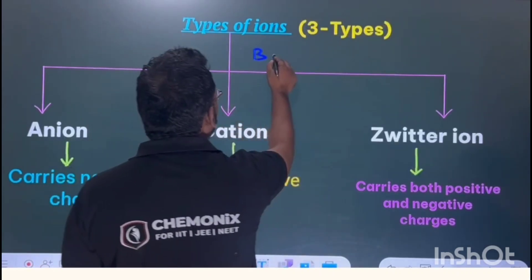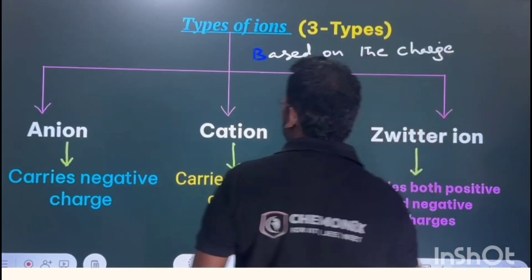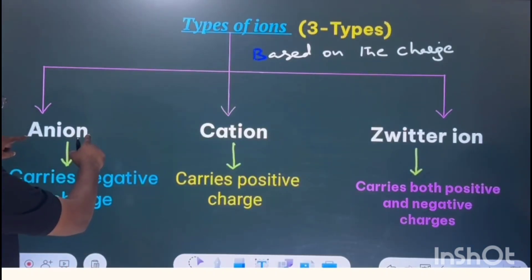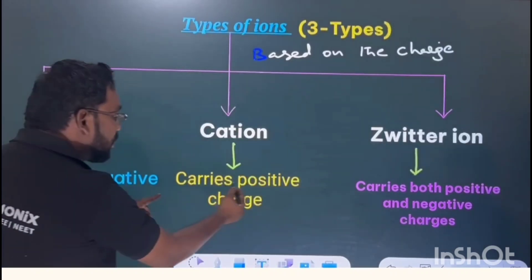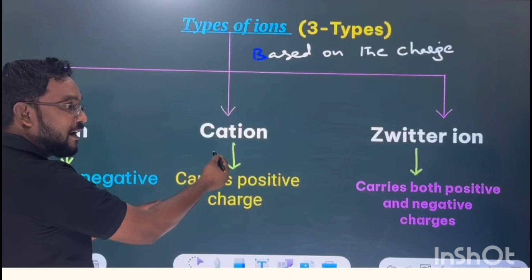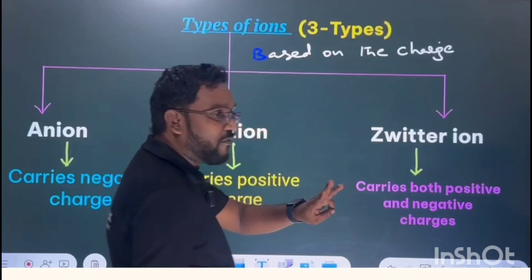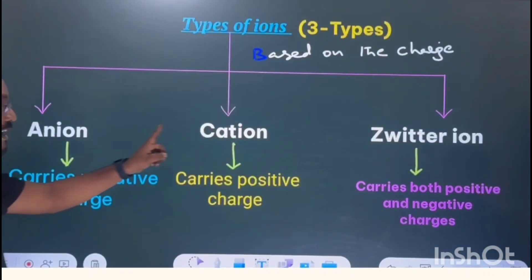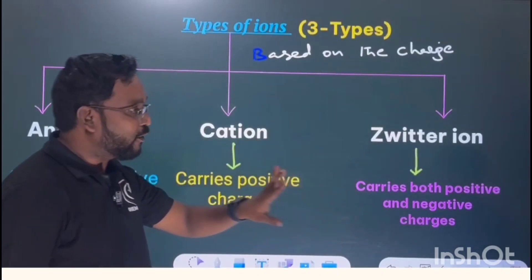There are three types of ions based on the charge. One is anion — the ion which carries a negative charge. If a positive charge is present, that is called a cation. If both positive and negative charges are present, that is called a zwitterion. So three types of ions: anion carries a negative charge, cation carries a positive charge, and zwitterion carries both positive and negative charges.